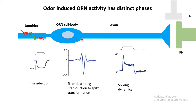At the axon initiation segment, this transduction current is integrated to form a spike — a transduction-to-spike transformation — which can be mathematically modeled by bilobed filters. The information in the axon is then propagated in the form of action potentials. When the action potential reaches the end of the ORN terminal, it proceeds toward the second level: the projection neurons. In humans, the projection neurons are tufted cells and mitral cells. There are also local interneurons that provide GABAergic inhibition to this synapse, which is very important for olfactory signal processing.